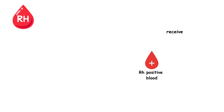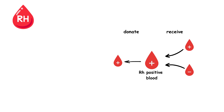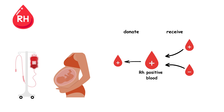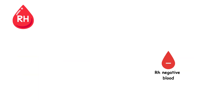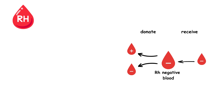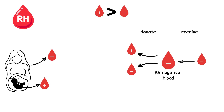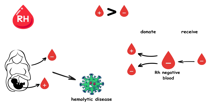RH positive blood can receive blood from both RH positive and RH negative donors. However, they can only donate to other RH positive recipients. This factor is significant in transfusions and pregnancy, as the presence of the RH antigen can lead to complications if mismatched. RH negative individuals can donate to both RH positive and RH negative recipients, but they can only receive RH negative blood to avoid a reaction. Understanding RH compatibility is crucial, particularly in managing RH negative mothers and RH positive fetuses to prevent hemolytic disease of the newborn.